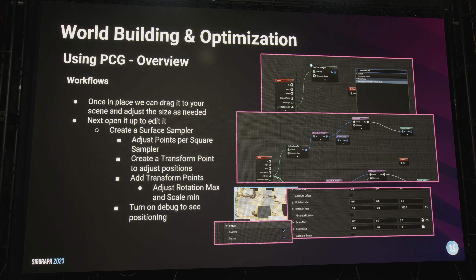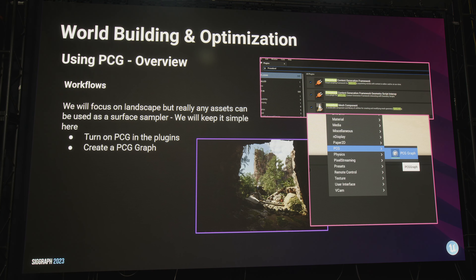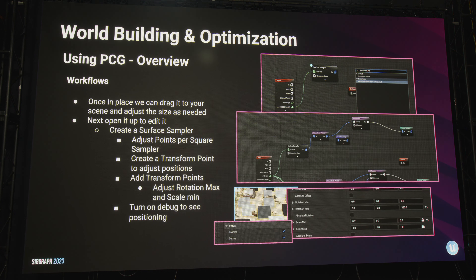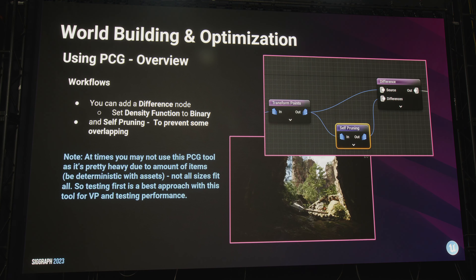To turn on PCG in Unreal, make sure you turn it on within your plugins to get your PCGs up and running. Then in your content browser you'll see a new subject you can choose called PCG. Self-pruning, as I mentioned, you can use that to prevent your geometry from getting on top of each other. Also setting things to binary in my difference node and density function.